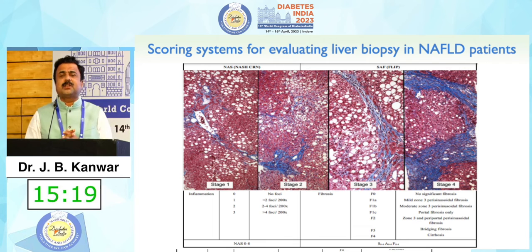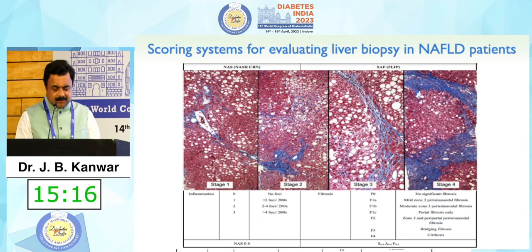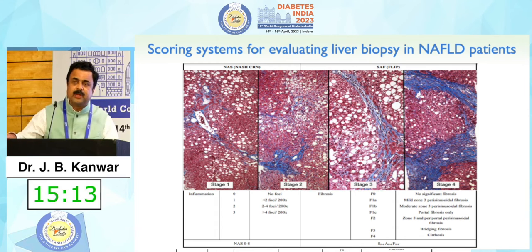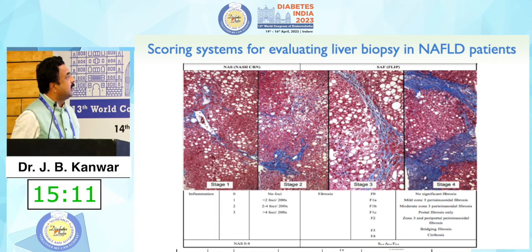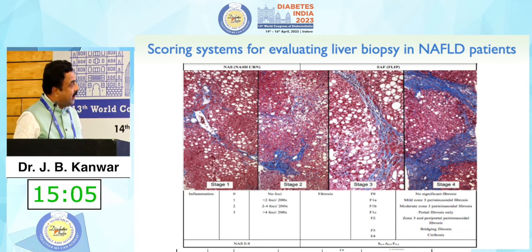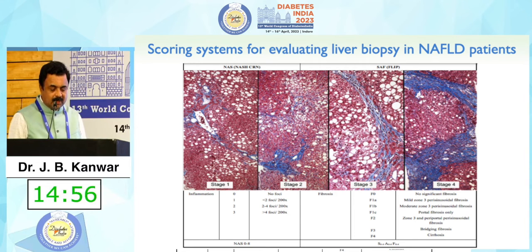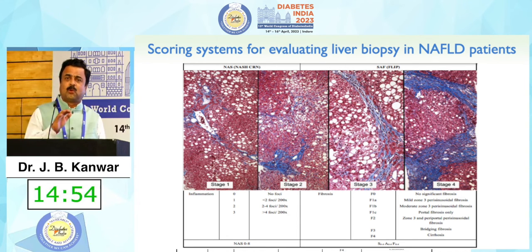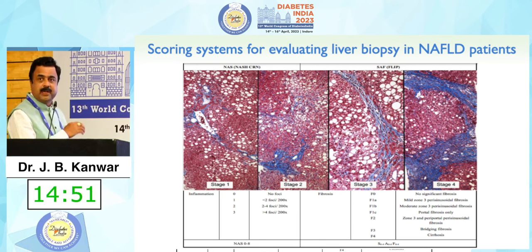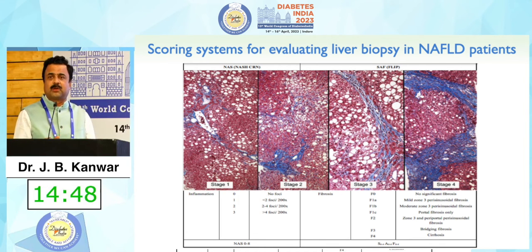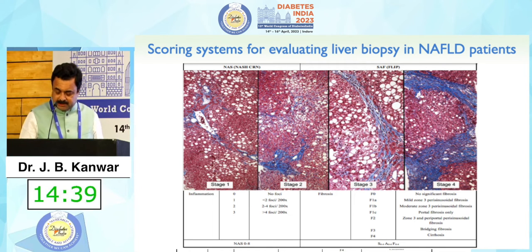These are the scoring systems developed for liver biopsy, which assess steatosis, ballooning, and inflammation — you can see the SARP guideline with different scoring systems. For fibrosis, there are stages: F1 is portal fibrosis only, F2 is periportal fibrosis where fibrosis extends beyond the portal region, F3 is bridging fibrosis involving multiple portal and pericecal regions, and F4 is cirrhosis.